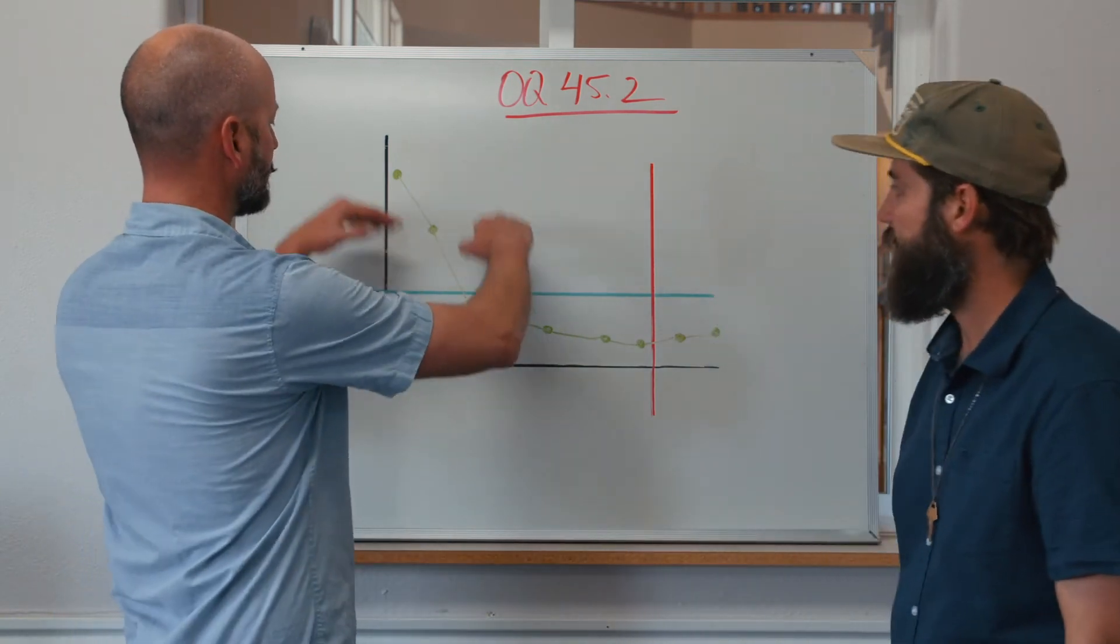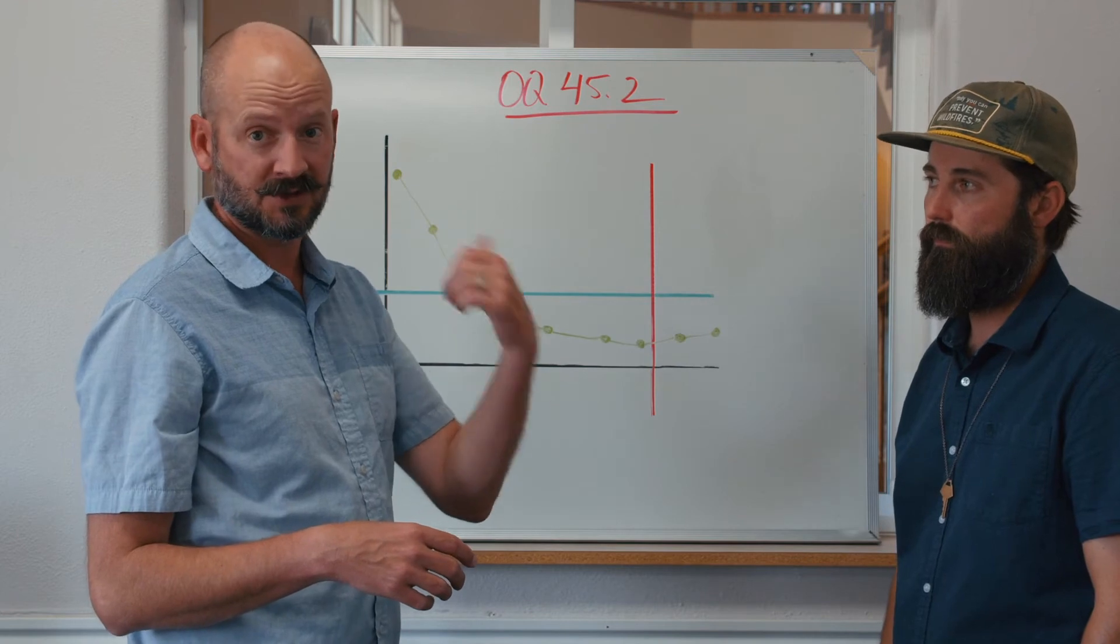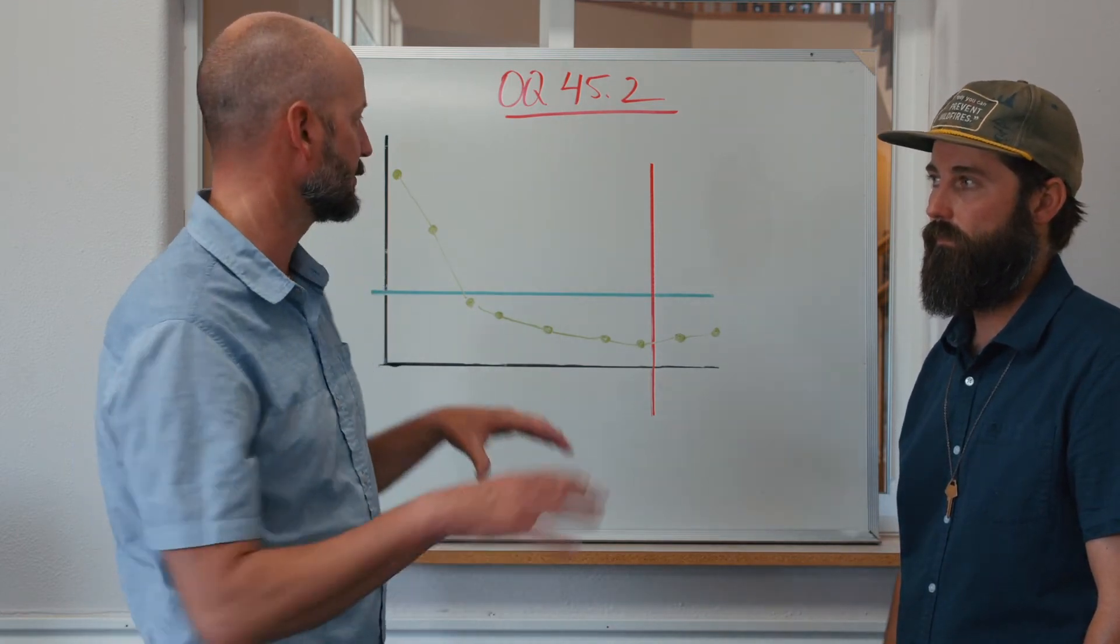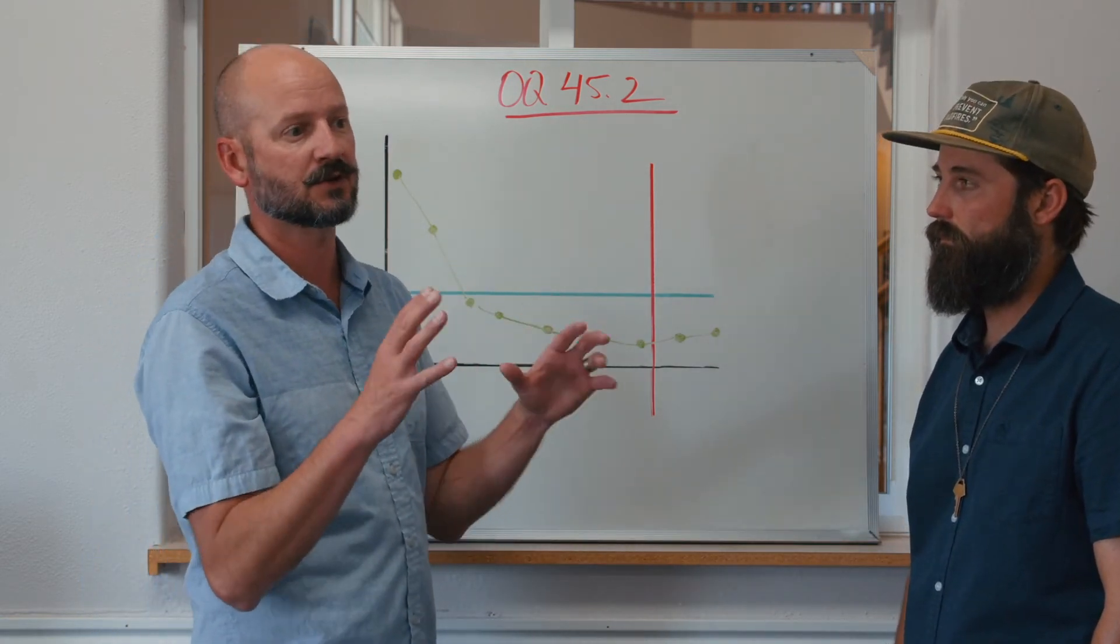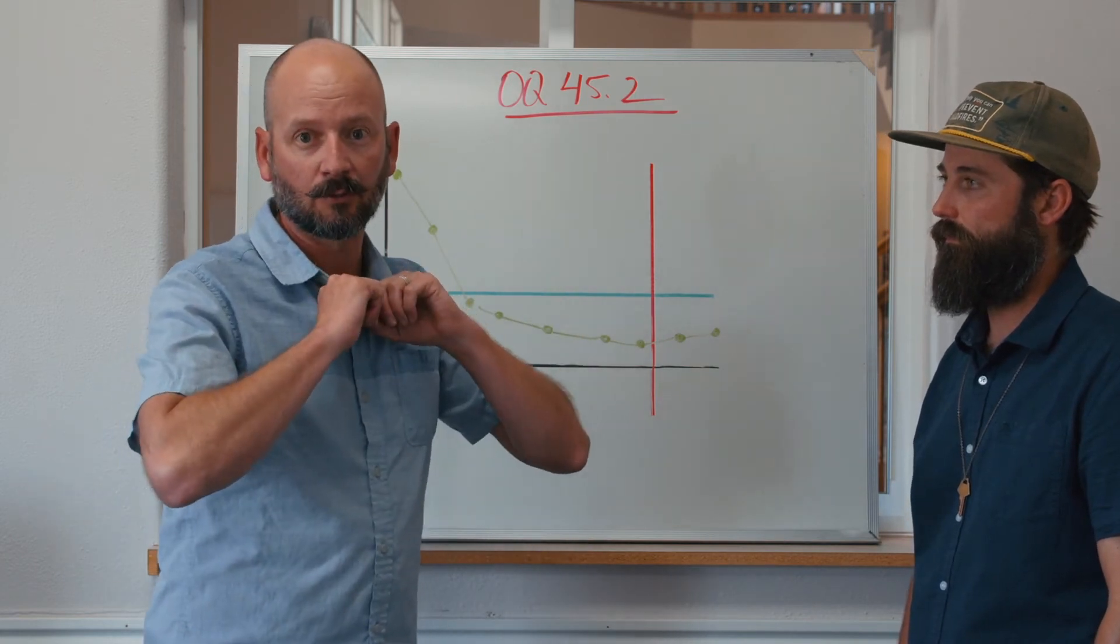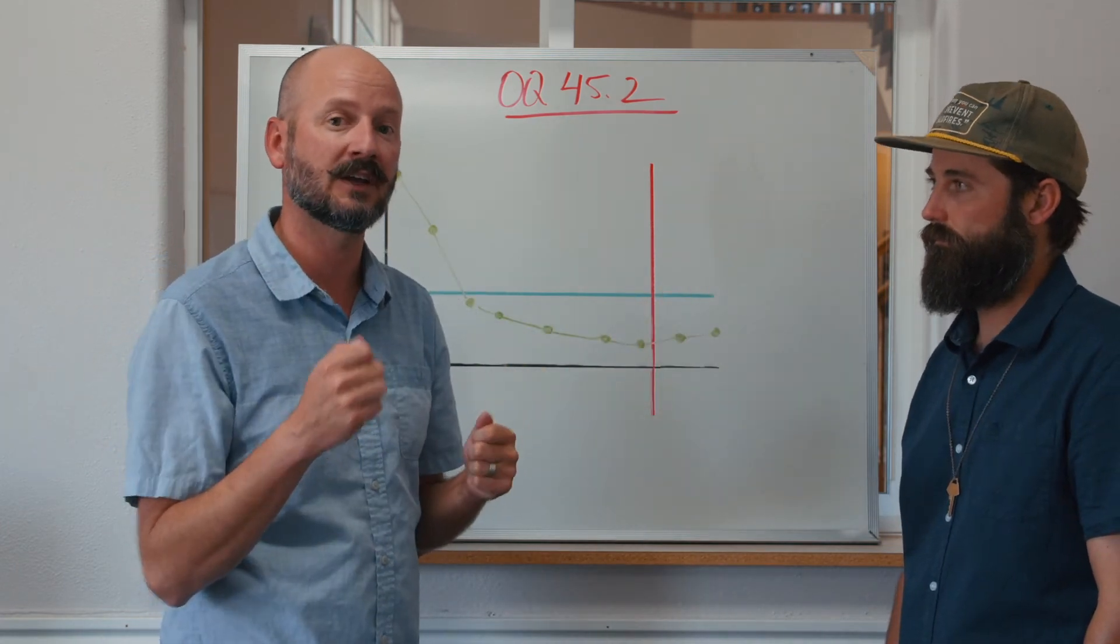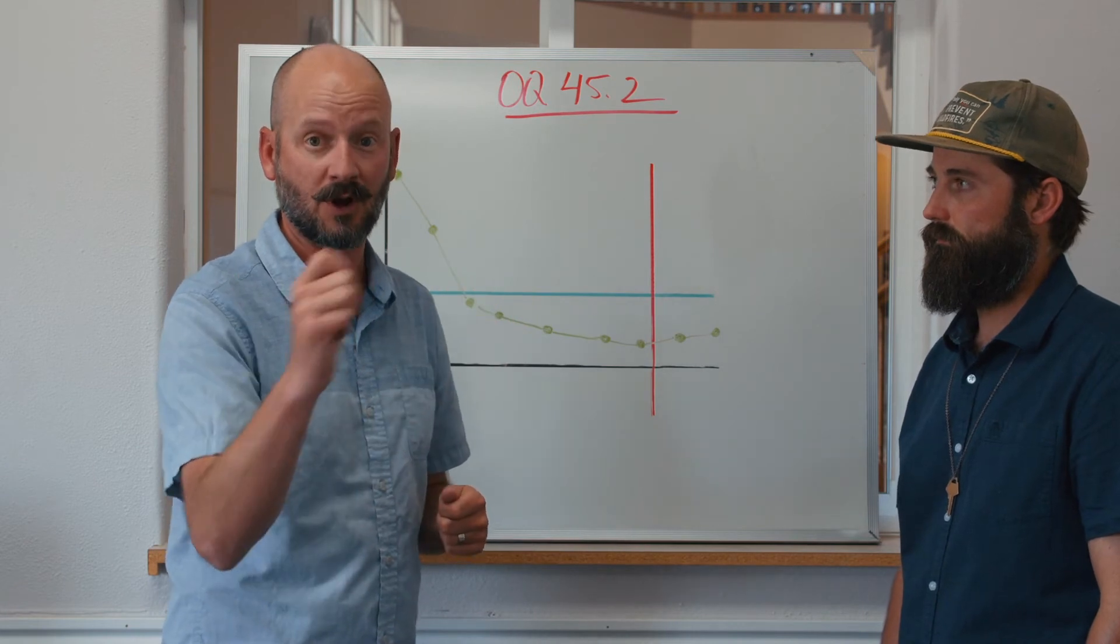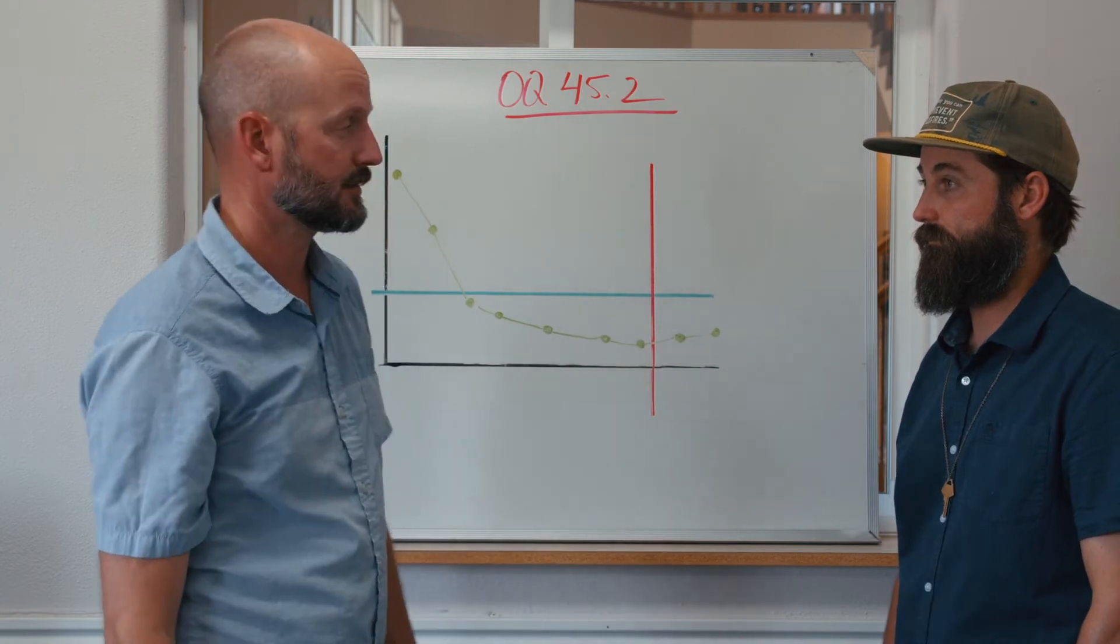Yeah, basically anybody above the clinical cutoff line is responding in a way that's consistent with somebody who is either receiving treatment services or probably should be. When they built the instrument, one of the ways they figure out whether it's measuring what they want is they give it to a random sample in the population, get scores back, and they should be able to predict without knowing where that person was whether or not they were in treatment. So if you're up here, it's consistent with people in need of services.